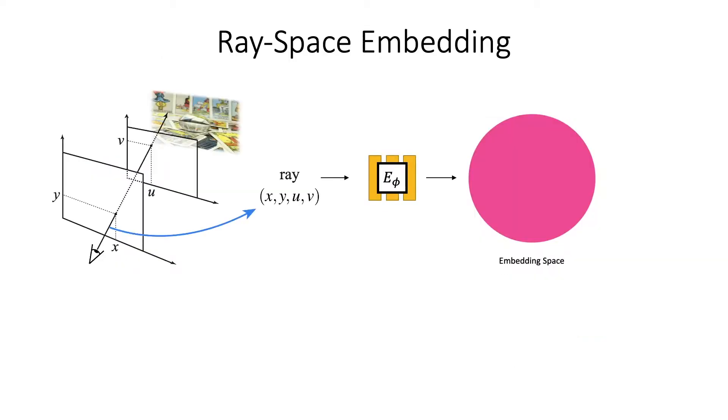To solve this problem, we introduce ray space embedding networks, which map the original ray space into an intermediate latent space. The goal of an embedding network is to facilitate both memorization and interpolation for a downstream neural light field representation.